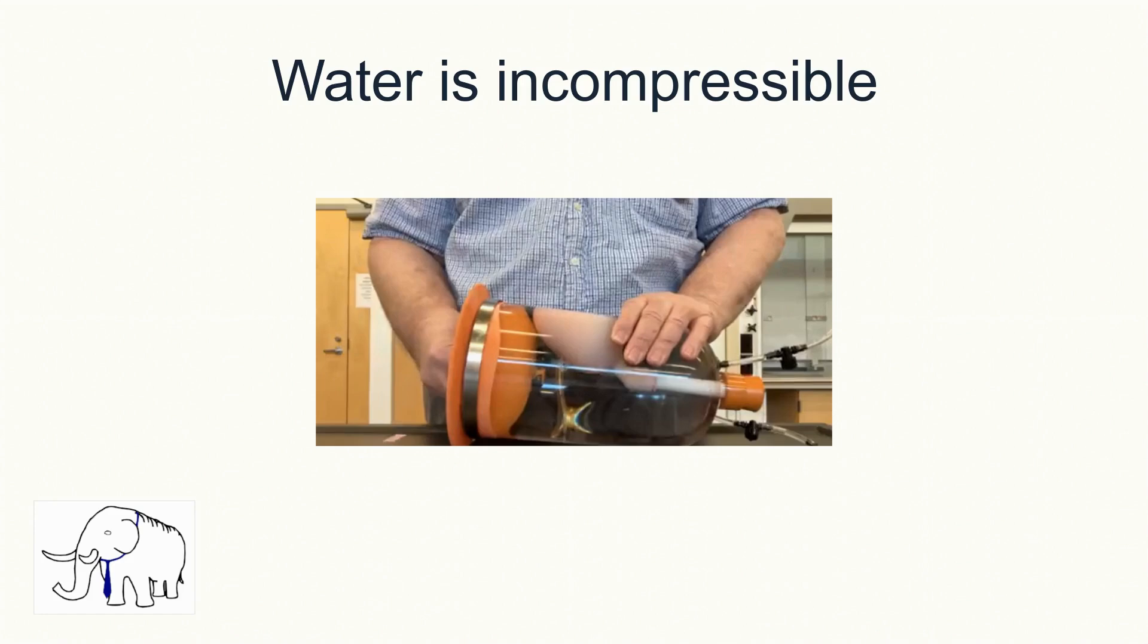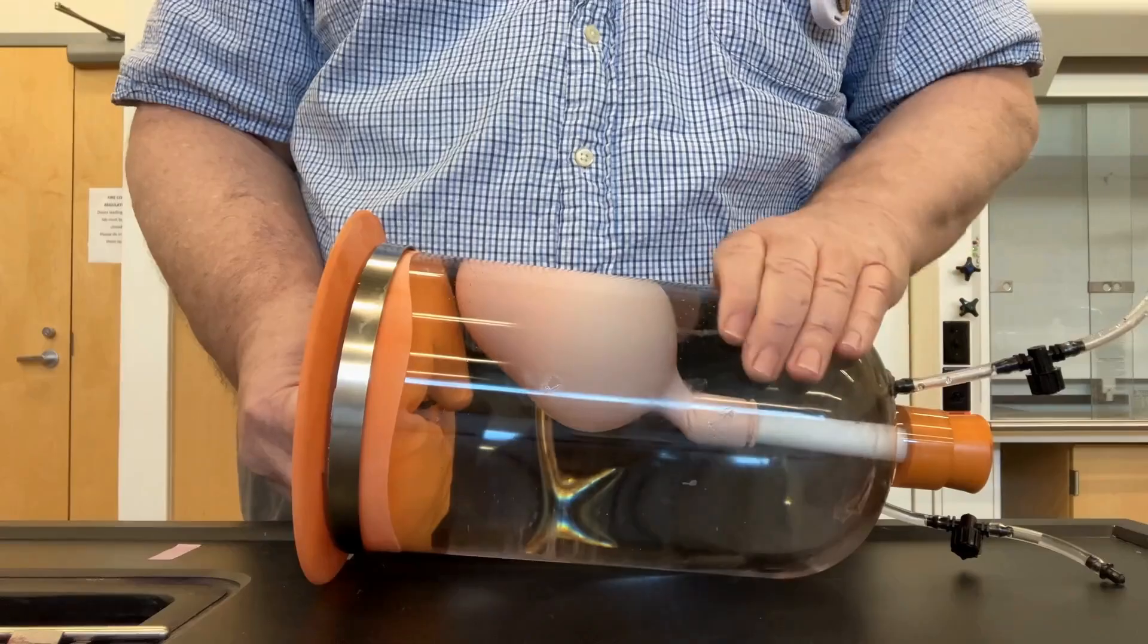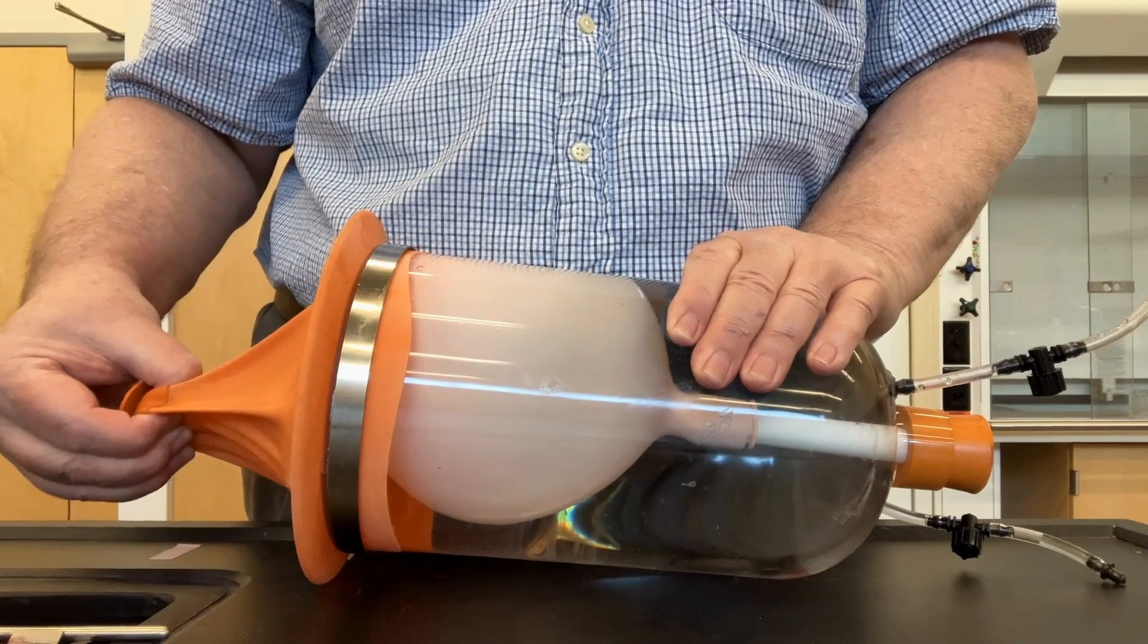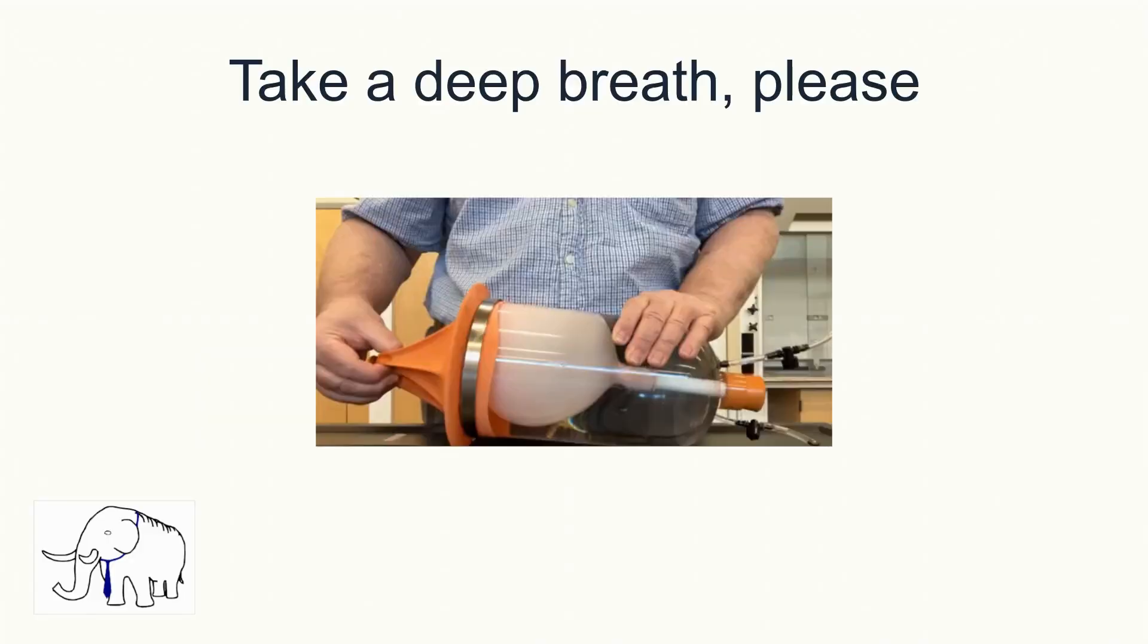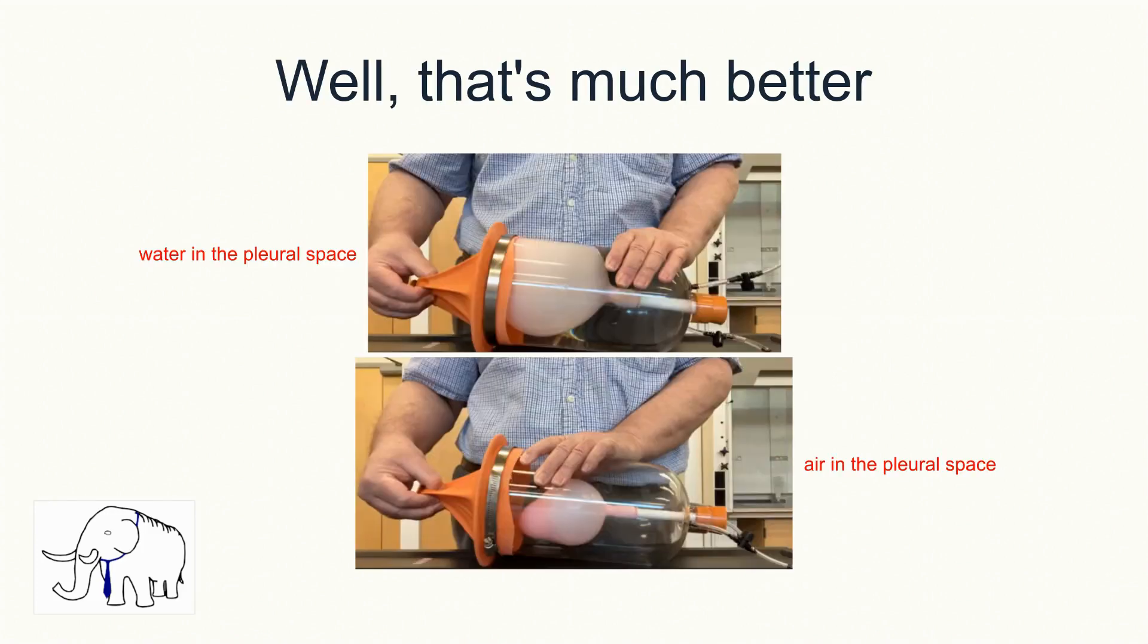So what happens when I pull down on the diaphragm now? Well then, that's much better. The one liter of water is still one liter of water. All of the change in thoracic volume that we got when the diaphragm contracted is now the change in the volume of the pulmonary space. Minus a little bit for lung compliance.